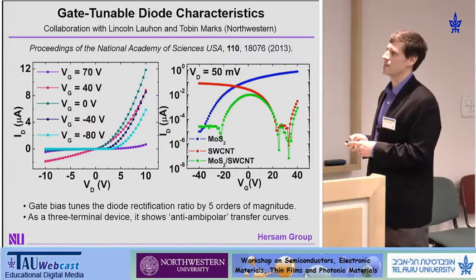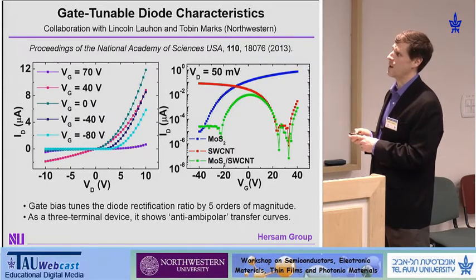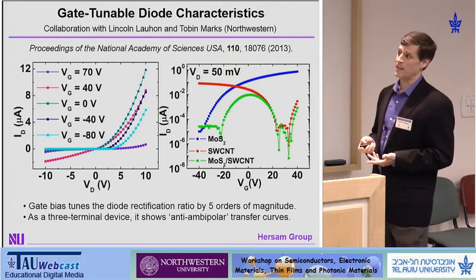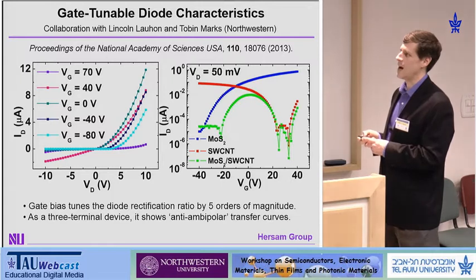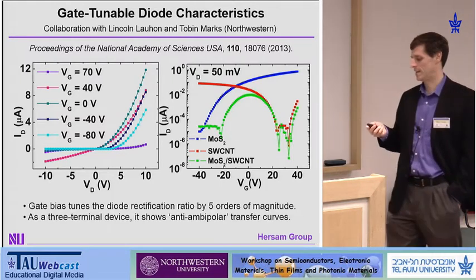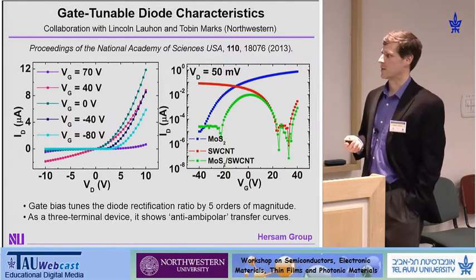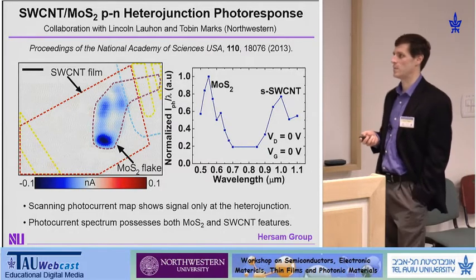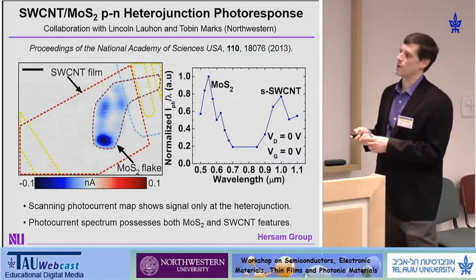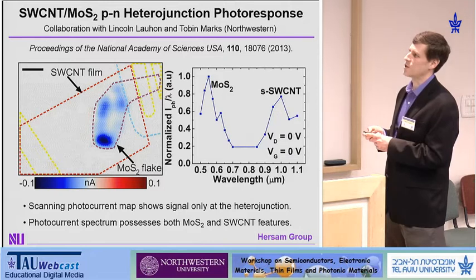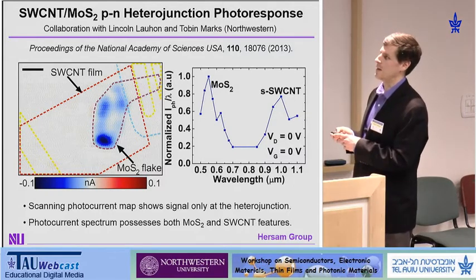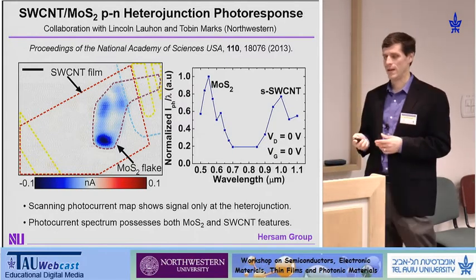If you look at this as a three-terminal device, at low gate voltage the device is on, but at high negative or high positive voltage the device is off, since you're fully depleting the n- and p-type sides of the junction respectively. This implies a new type of transfer curve — a so-called anti-ambipolar transfer curve, which is the opposite of the ambipolar curve, and this anti-ambipolarity is, to our knowledge, unprecedented in solid-state electronics. These materials — nanotubes and molybdenum disulfide — are direct bandgap semiconductors, so they are sensitive to light. In scanning photocurrent microscopy, we see a photocurrent in the junction regime, and the spectral response shows both nanotubes and molybdenum disulfide are participating — so it's a two-color photodiode enabled by this unique geometry.